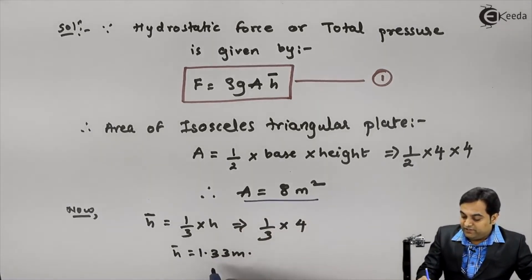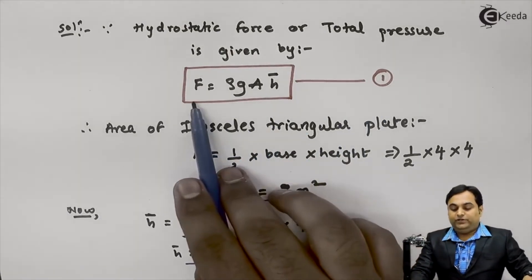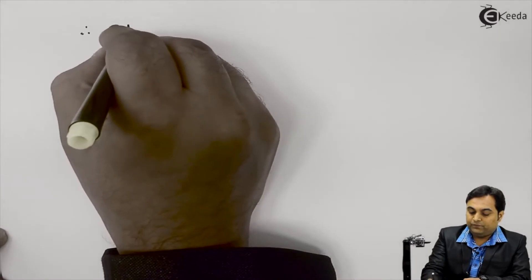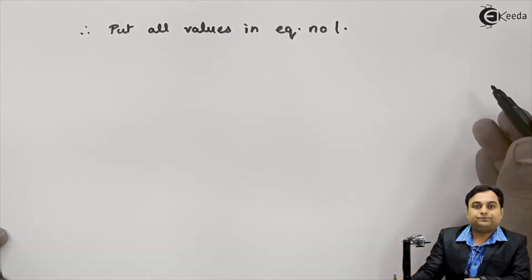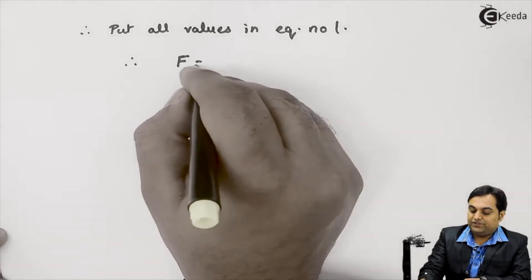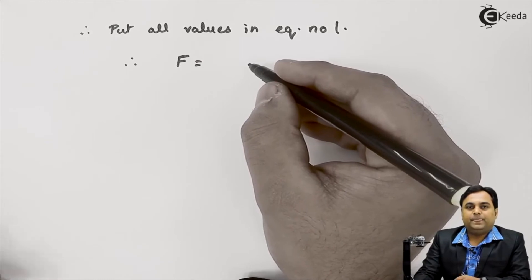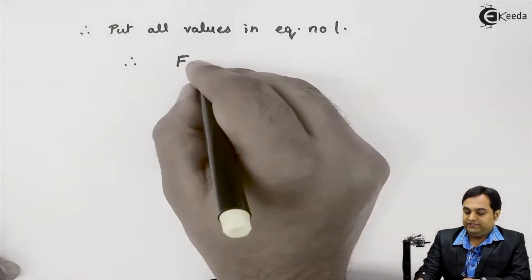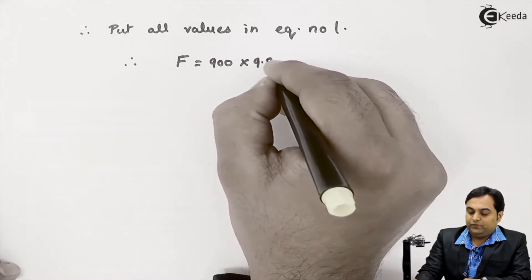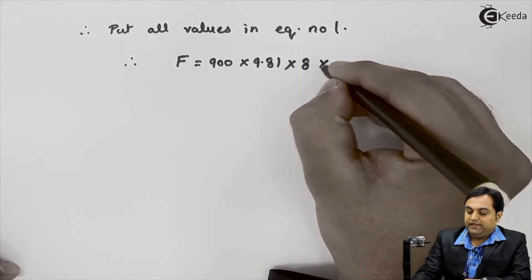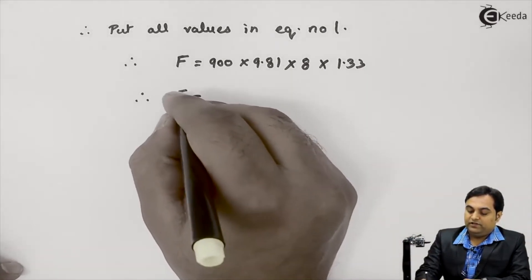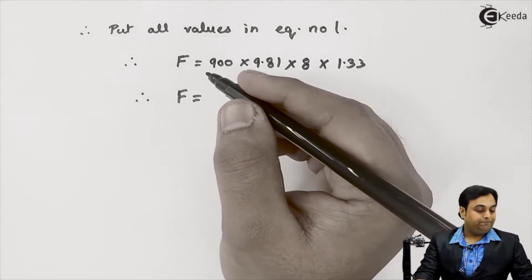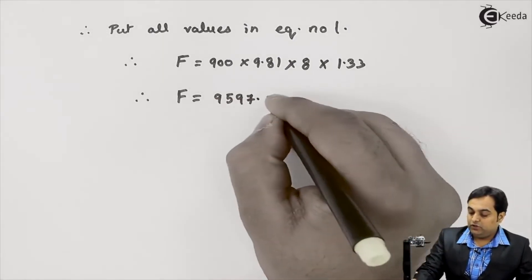Now with area and h̄ available, I will put all values into equation number one. Therefore, total pressure F equals rho into g into A into h̄, which is 900 into 9.81 into 8 into 1.33. Calculating this, the hydrostatic force comes out to be 9597.6 Newton. This is the first answer.